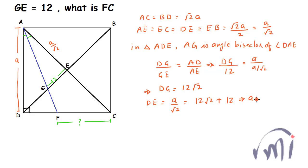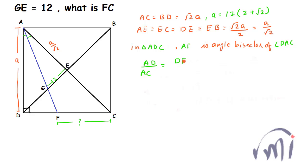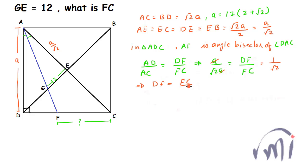So GE is 12 and DG is equal to 12 root 2. From here we can say DE, which is equal to A divided by root 2, is equal to 12 root 2 plus 12. From here you can say A is equal to 24 plus 12 root 2, or A is equal to 12 multiplied by (2 plus root 2). Now again in triangle ADC, AF is the angle bisector of angle DAC. So the ratio AD to AC equals the ratio DF to FC, which gives A divided by root 2·A, equal to DF divided by FC. This simplifies to 1 divided by root 2. So DF is equal to FC divided by root 2.